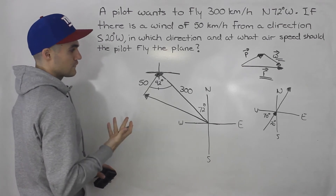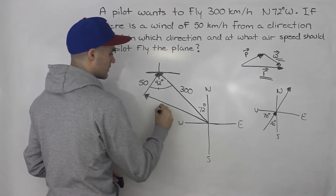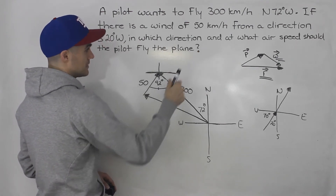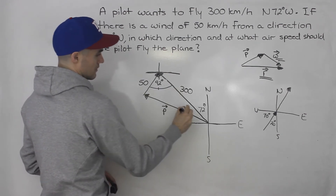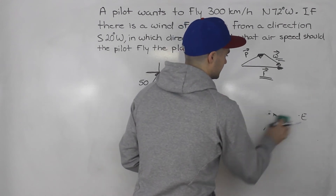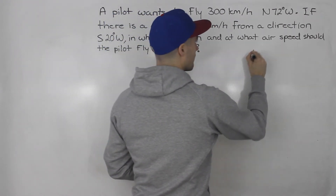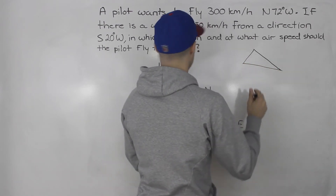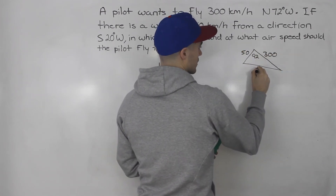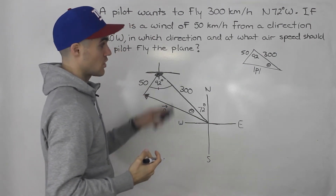Now we have enough information to figure out the airspeed — that's going to be the plane vector. Solving for the magnitude of this vector gives us the airspeed. If we want the direction, we can solve for theta. Drawing this triangle on the side: we have 92 degrees, 300, and 50, and we're solving for the magnitude P and for theta.